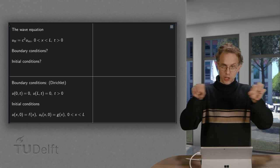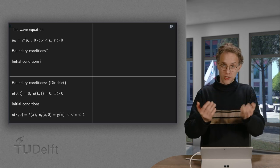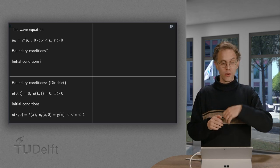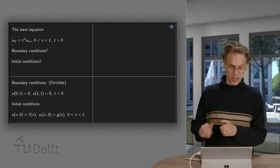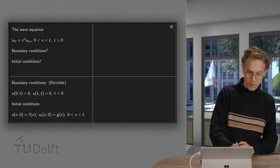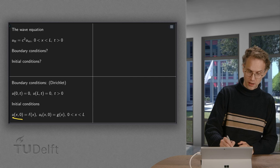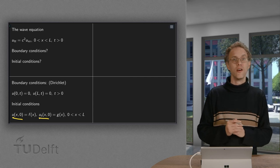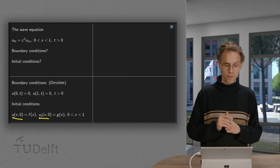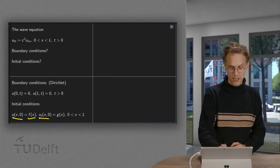One for the initial displacement, but that does not tell the whole story. You will also need to specify the initial velocity. So you will have to specify both the u at x comma 0 and u_t of x at time 0, given some functions f and g.